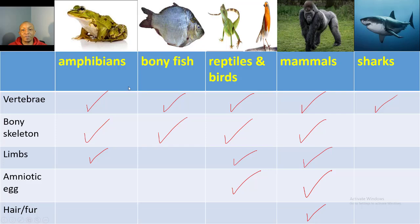Now let's check and see how you did. First, vertebrae: all of them have vertebrae — so amphibians, bony fish, reptiles, birds, mammals, and sharks. Next, a bony skeleton: amphibians, bony fish, reptiles, and mammals have a bony skeleton. Sharks do not. As far as limbs: amphibians, reptiles, birds, and mammals have limbs.